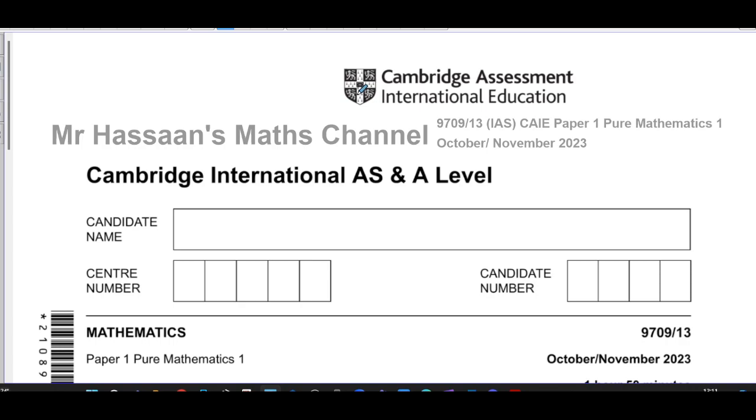This is Hassan's Math Channel and I'm going to answer questions from the October-November 2023 paper from Cambridge AS level. This is the 9709 syllabus, paper one, variant three, pure mathematics. I have set this paper as a mock exam for my students and I'm answering each question one by one, going through some of the mistakes that students have made.